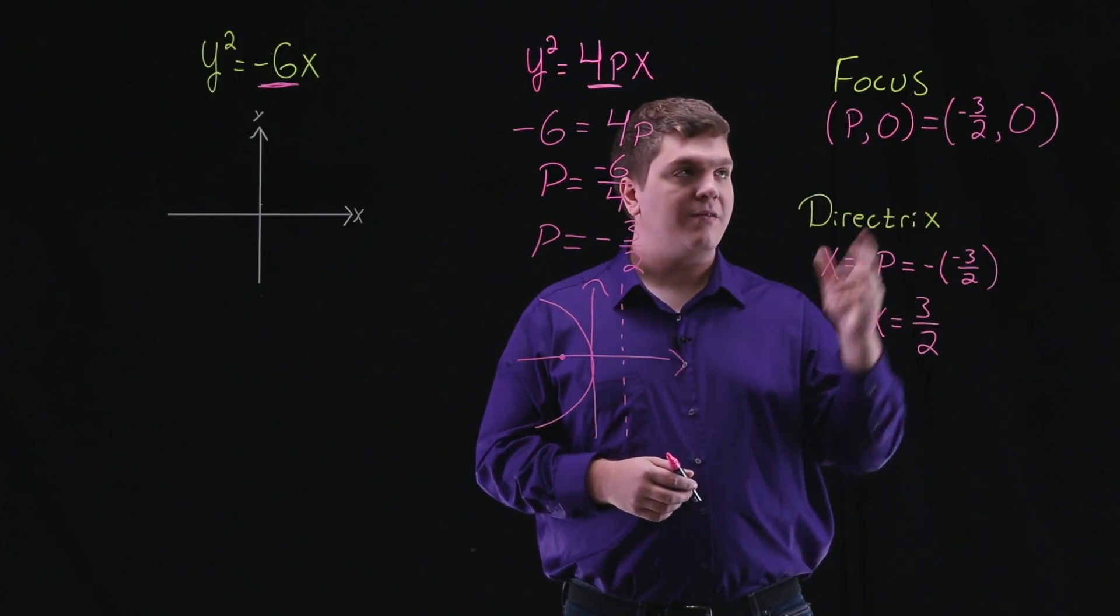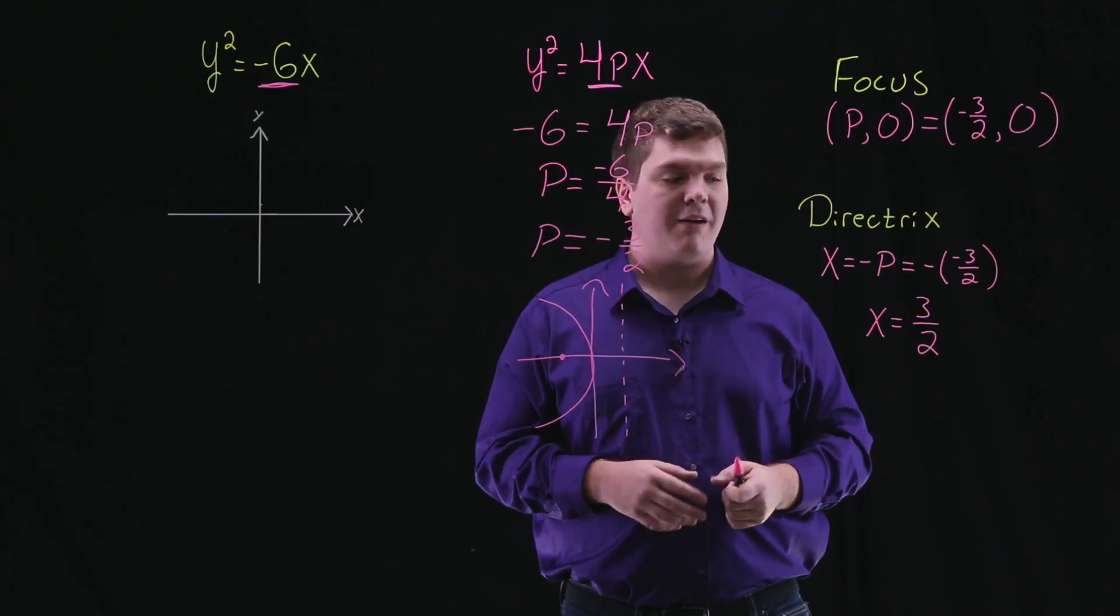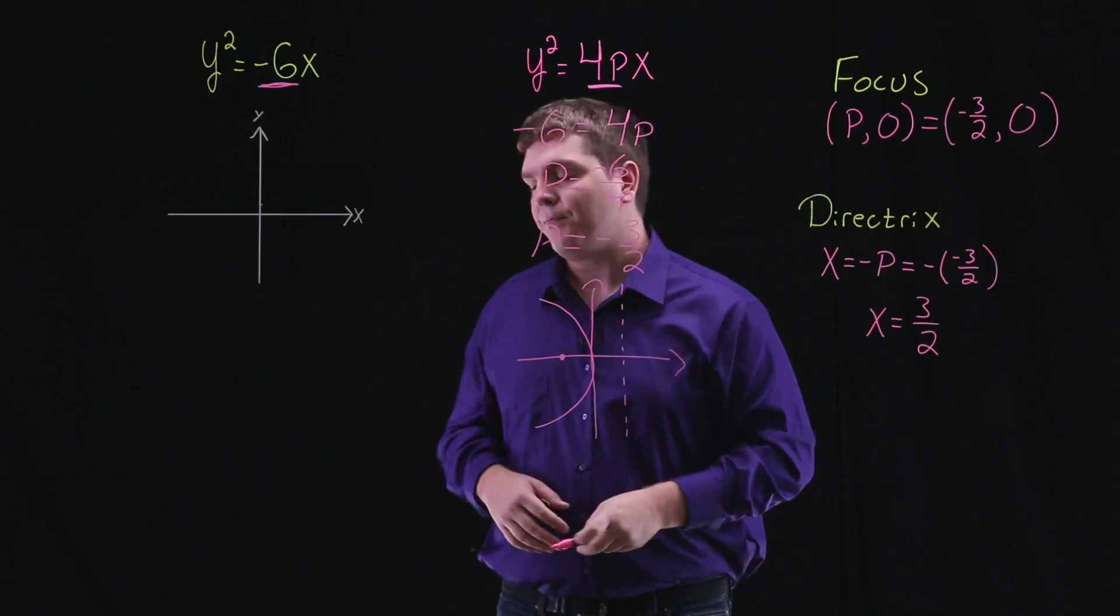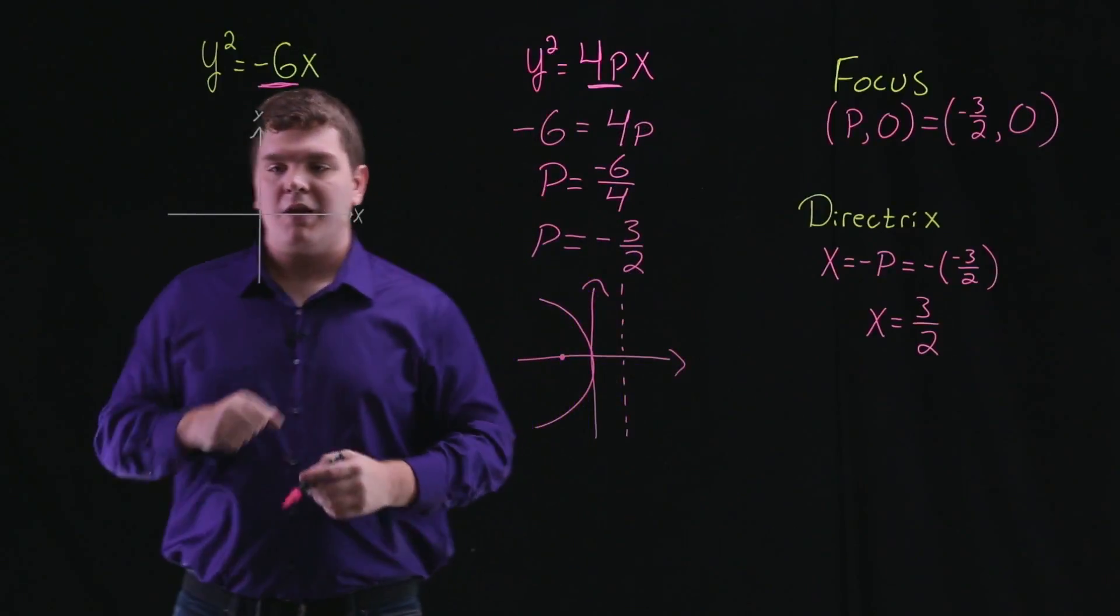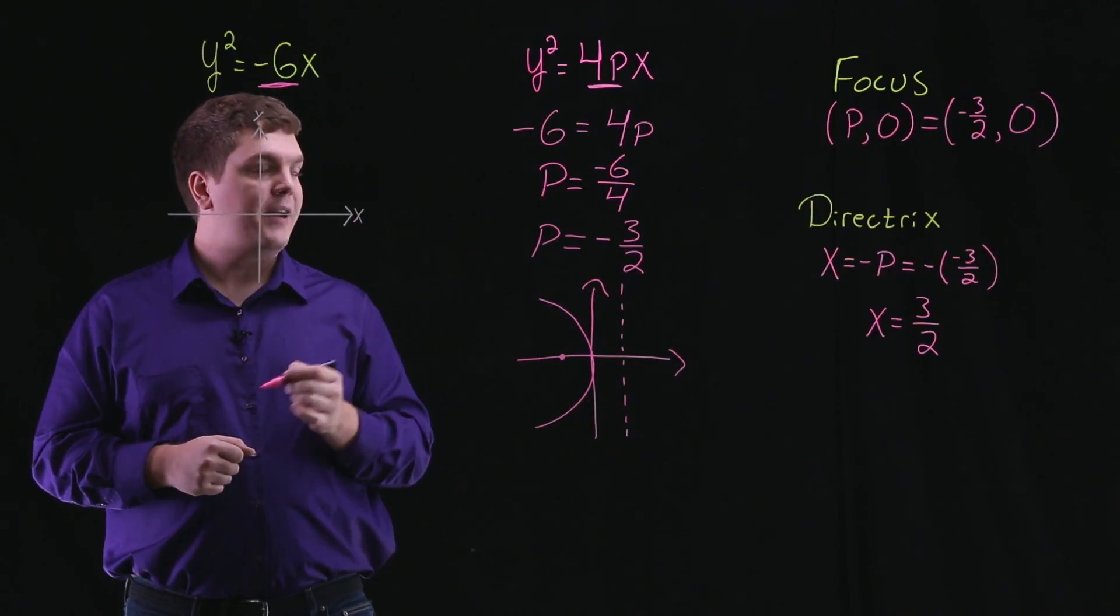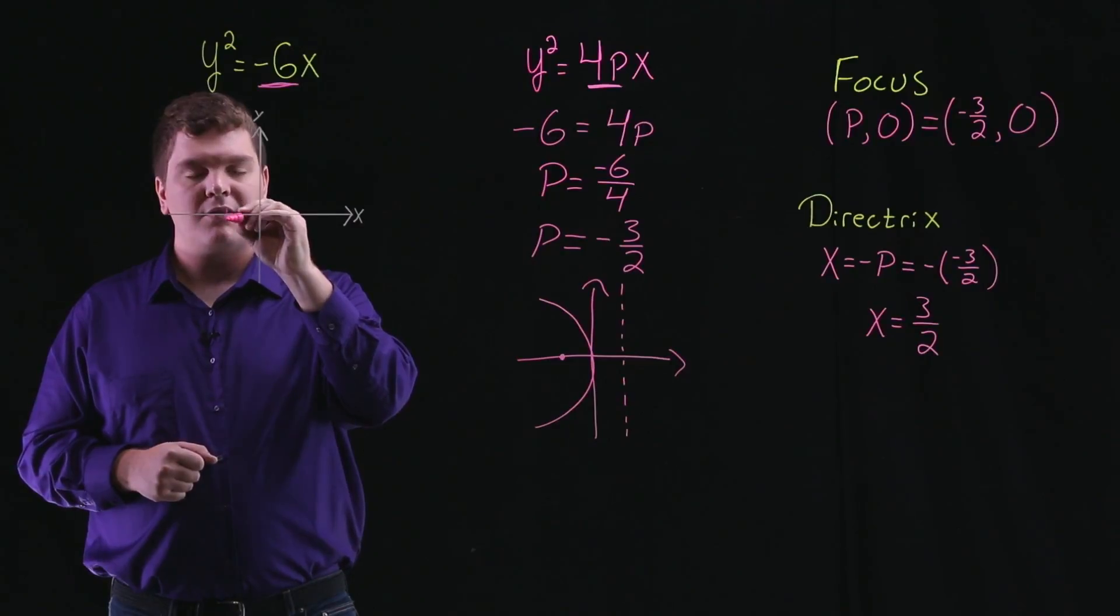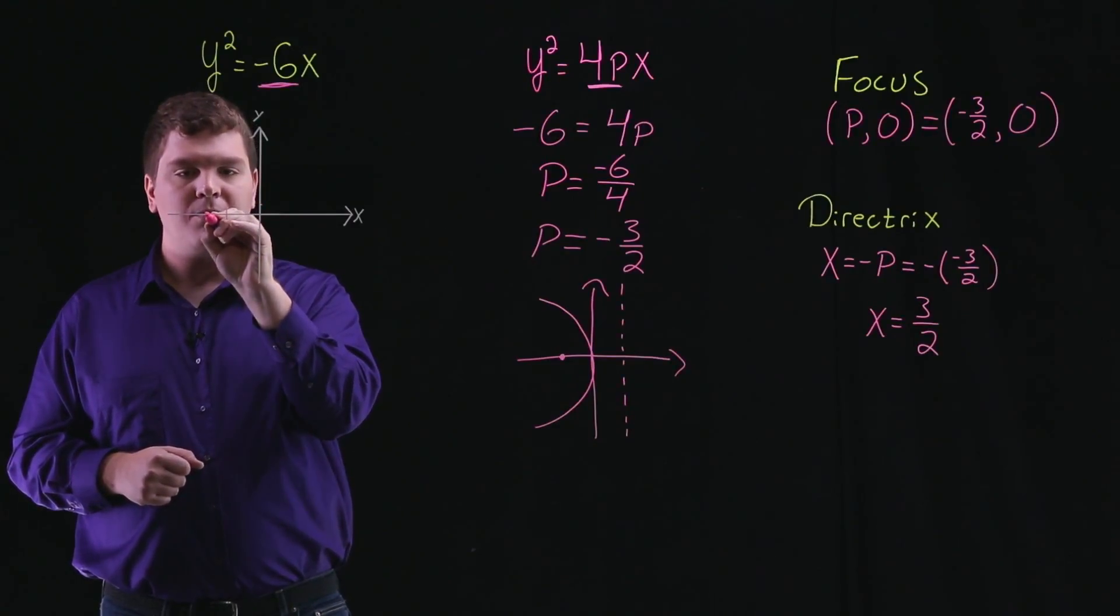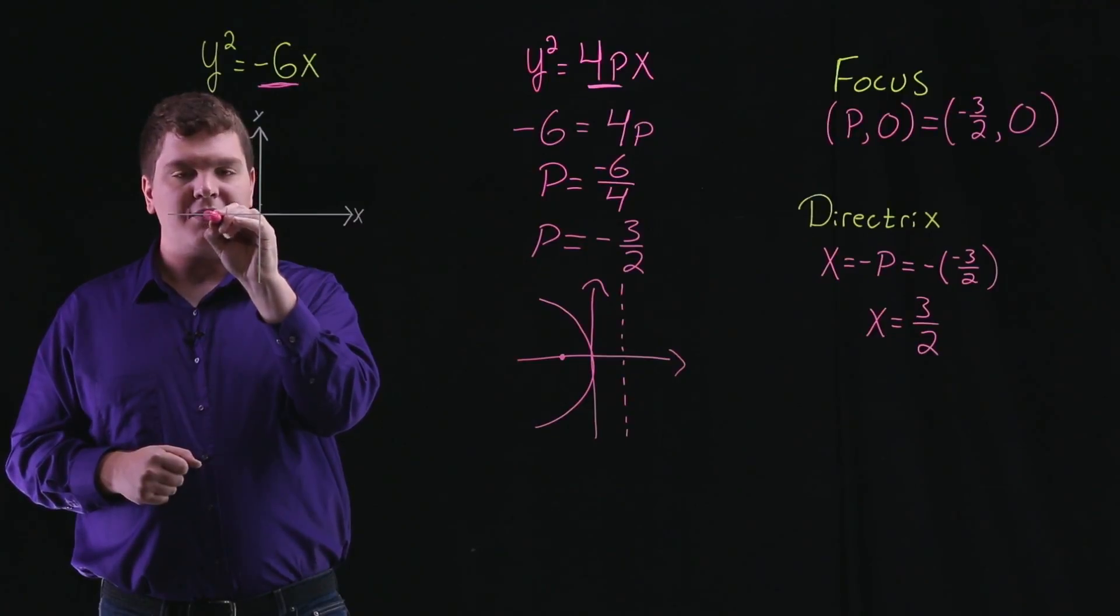Now we can use these two pieces of information to sketch the graph. The focus we said was the point (-3/2, 0). Let's come over our x-axis, -3/2, so that's -1.5, between -1 and -2, and the y coordinate is 0.